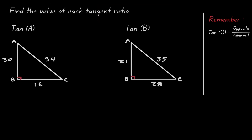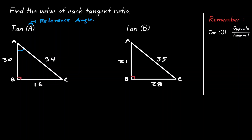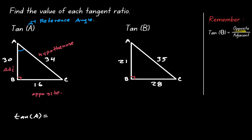Let's look at some examples. Let's find the value for each of the following tangent ratios. Under example A, we want to find the tangent of A, so A is our reference angle. Opposite of 90 degrees — that's the hypotenuse. Opposite of our reference angle — that's the opposite side. The side next to our angle — that's our adjacent. The tangent of A equals the opposite, which is BC with a value of 16, divided by the adjacent, which is line segment AB with a length of 30.